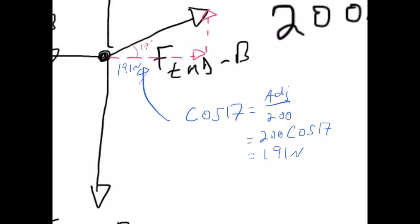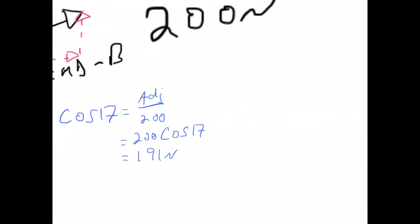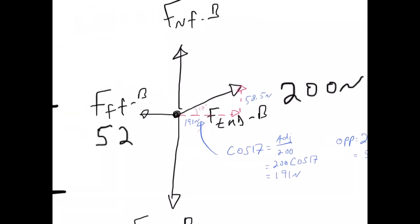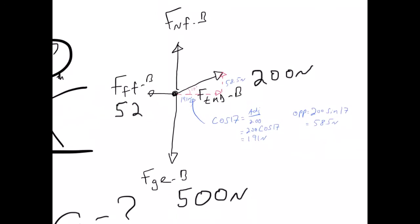For the vertical component, we use sine: the opposite side equals 200 sine 17, which equals about 58.5 newtons. Now let's figure out how big our normal force is. We have 500 newtons down and already 58.5 newtons up from the vertical component of tension. We need a total of 500 up, so the normal force is 500 minus 58.5, giving us a normal force of 441.5 newtons.